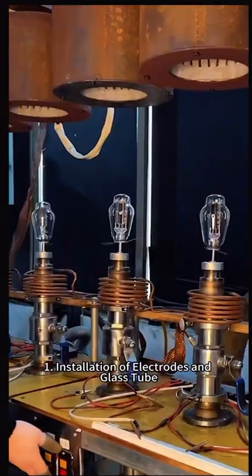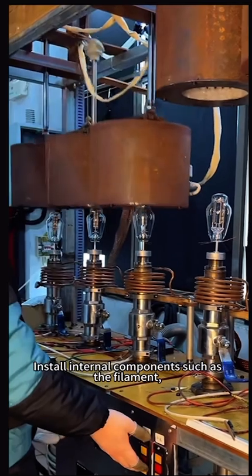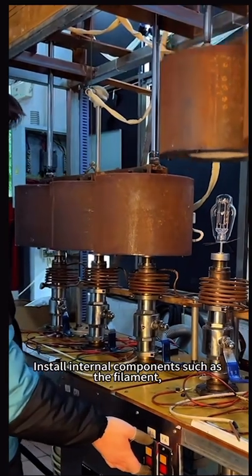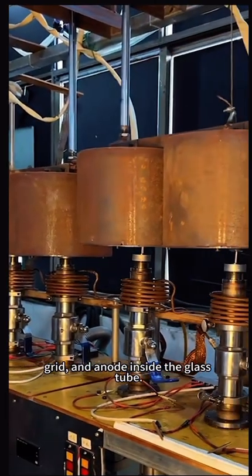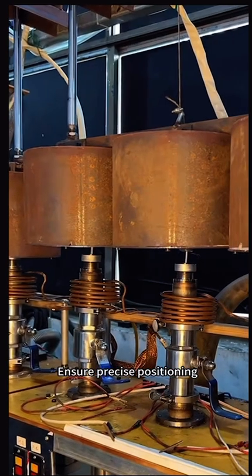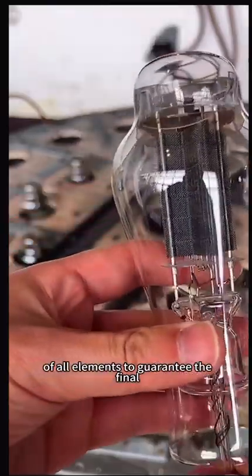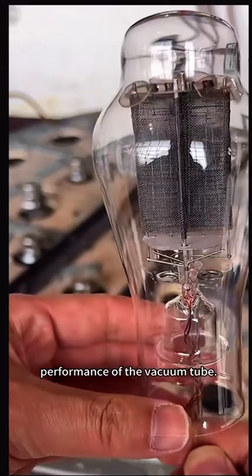Installation of electrodes and glass tube. Install internal components such as the filament, grid, and anode inside the glass tube. Ensure precise positioning of all elements to guarantee the final performance of the vacuum tube.